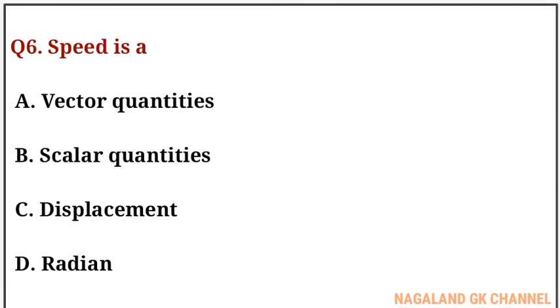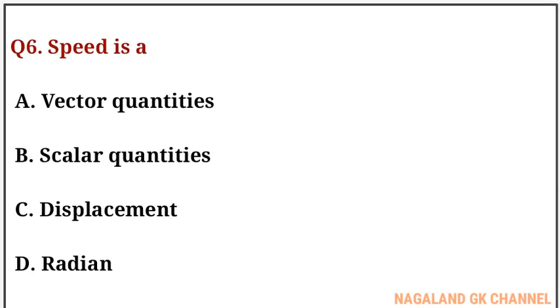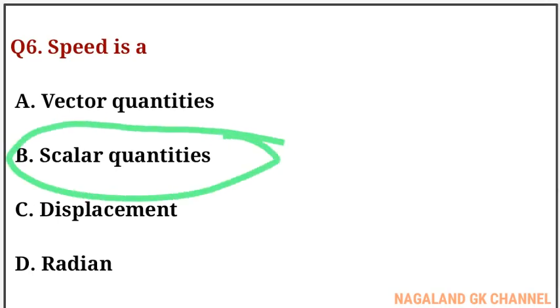Question number six: speed is — A. The correct answer is option number B, that is scalar quantities.